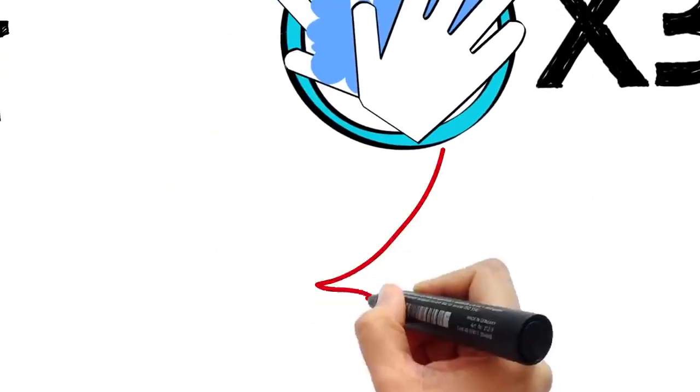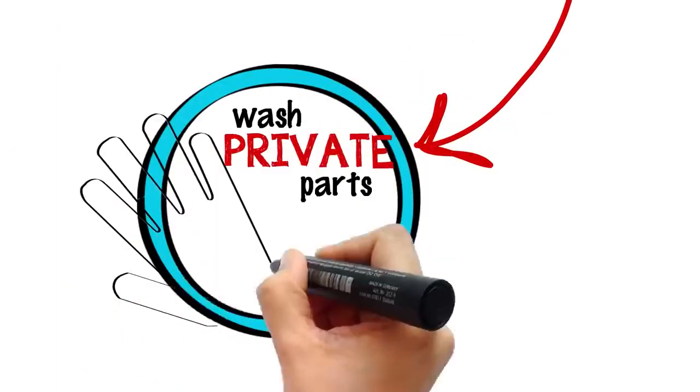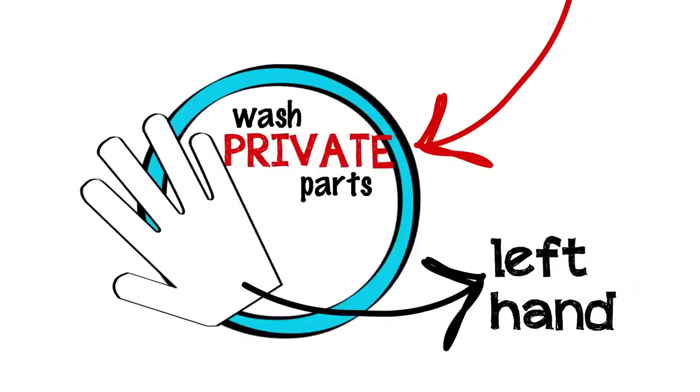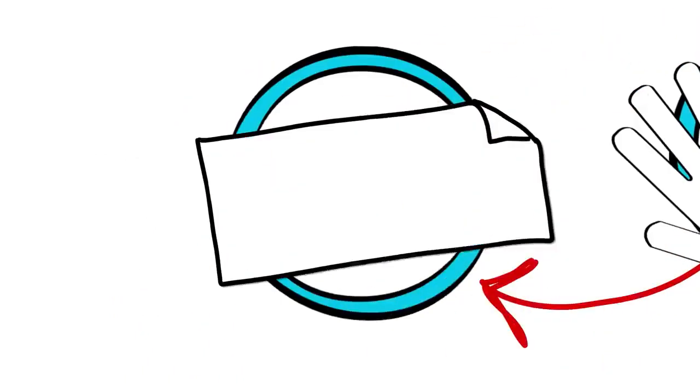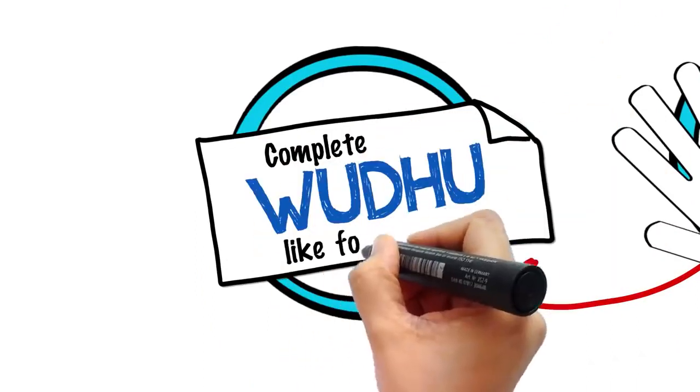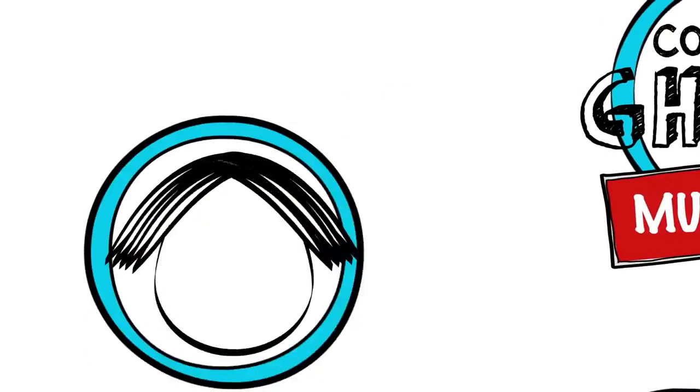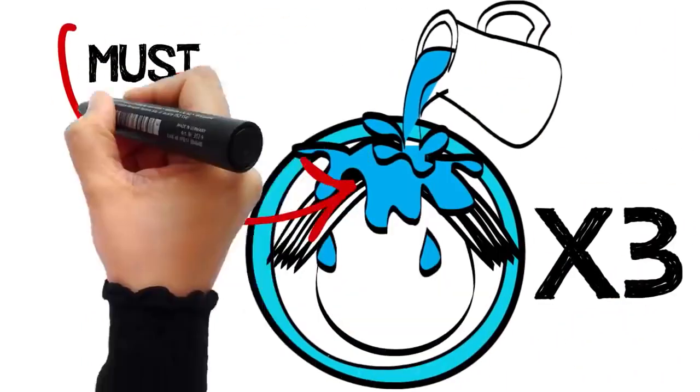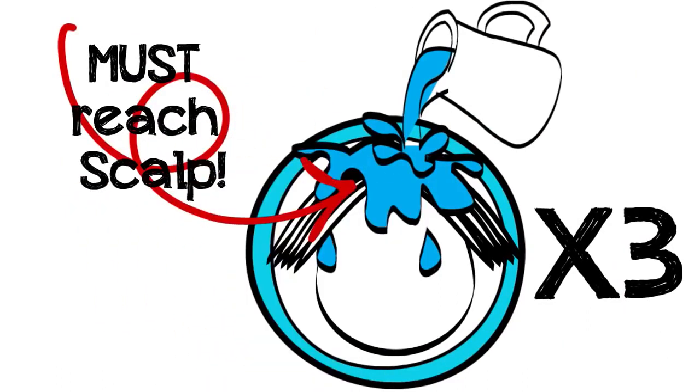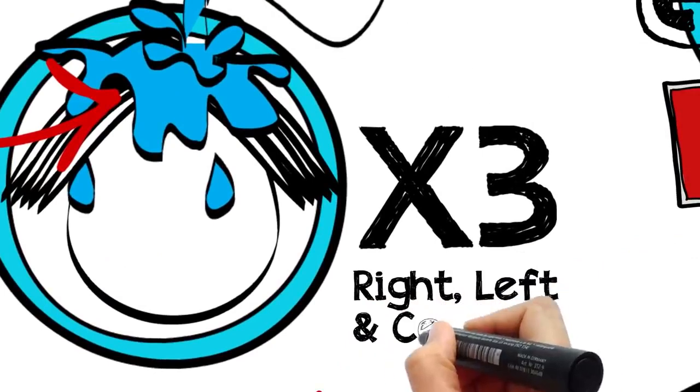Then with your left hand, wash your private parts and anywhere else that is contaminated with traces of impurity. Then make a complete wudu just as you would for prayers. Then pour water over your head three times, rubbing and making sure that it thoroughly reaches your scalp. Some scholars said three times means once on the right, next on the left, and then in the center.